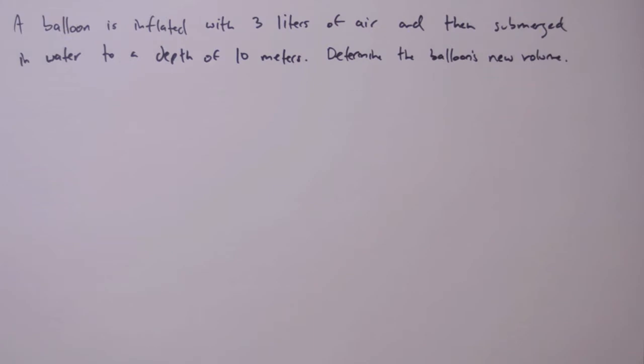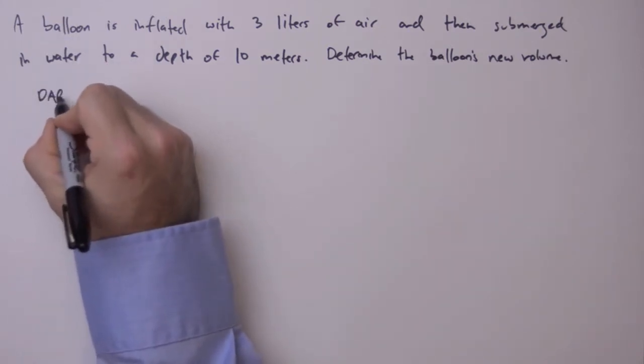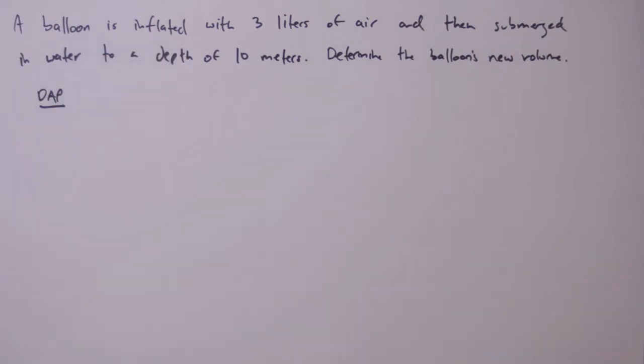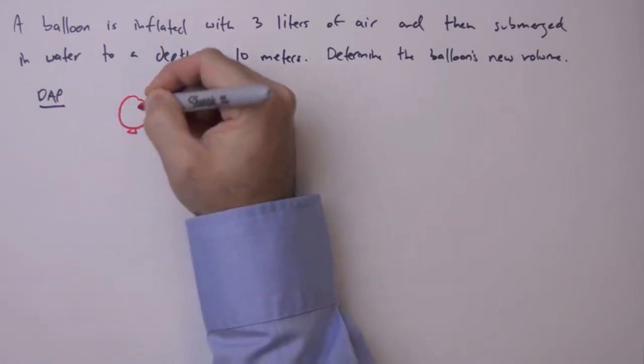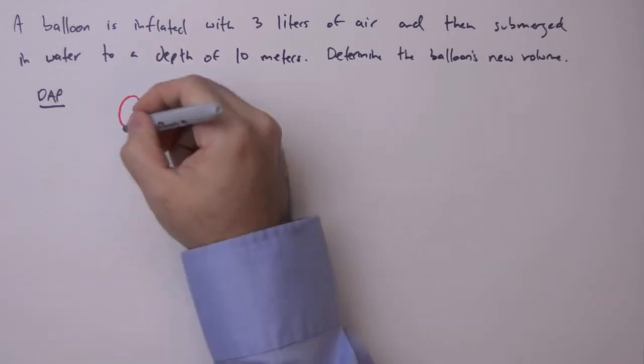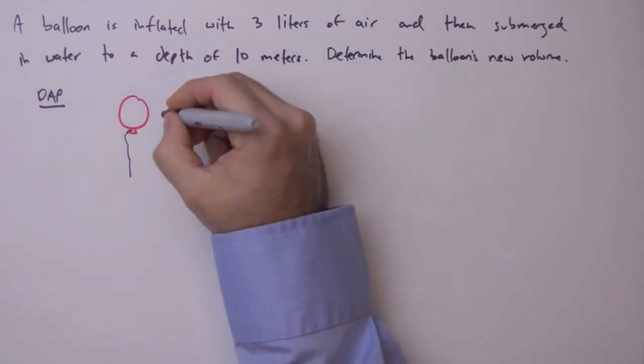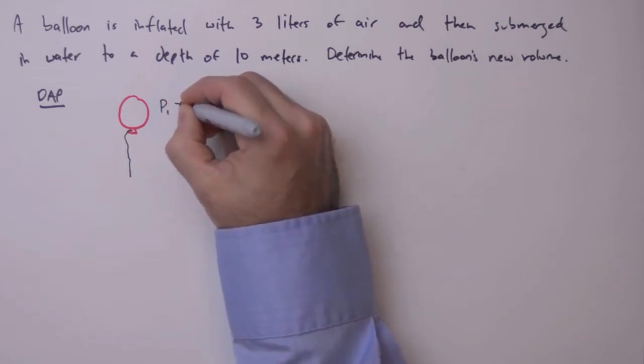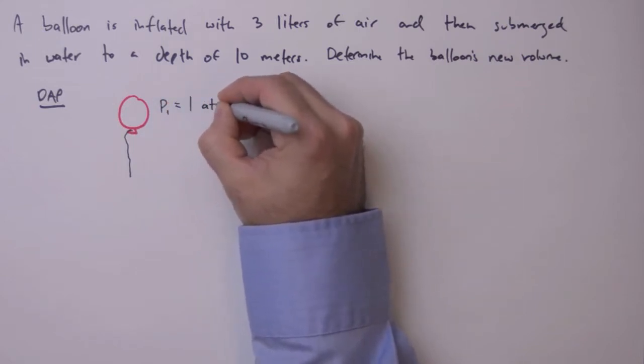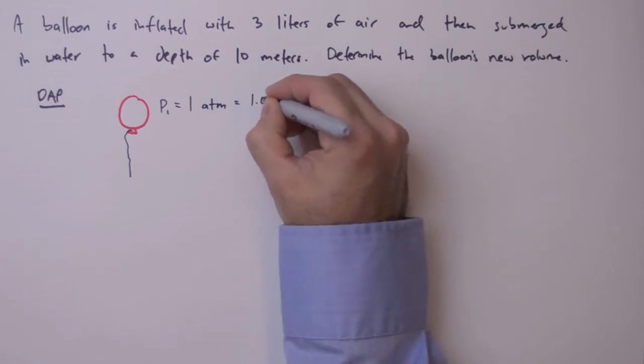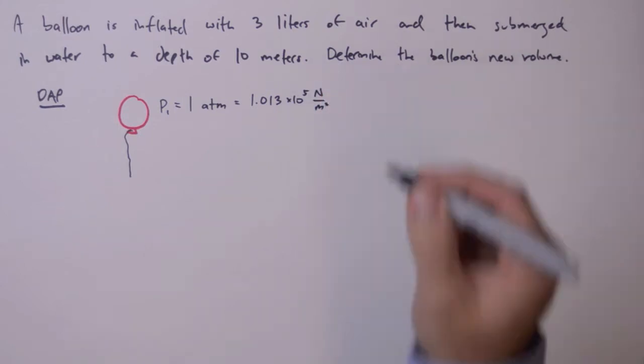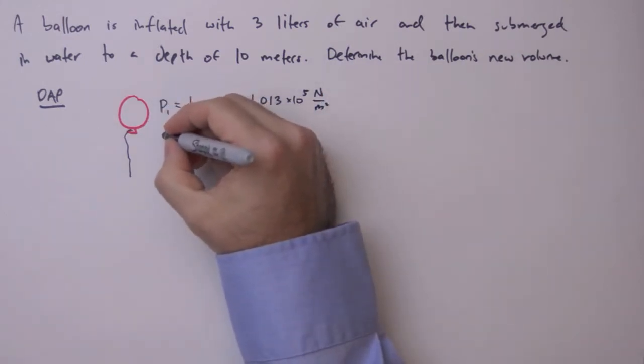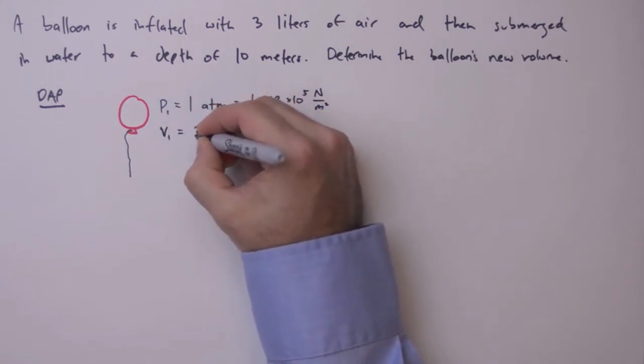What we want to do is determine the balloon's new volume. The first thing we do always is draw a picture. Here is our picture, we'll use classic color for the balloon. This balloon is under the pressure of one atmosphere to begin with, which is 1.013 times 10 to the fifth newtons per square meter pascals. And the initial volume of this balloon is three liters.